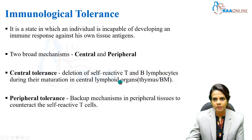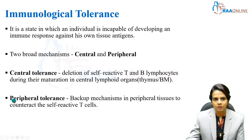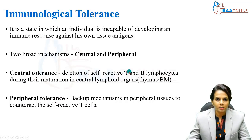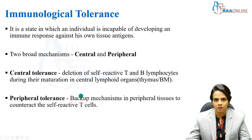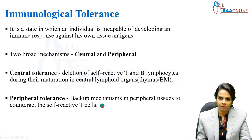Some self-reactive T cells and B cells escape central tolerance and leak into the peripheral tissues. There are various backup mechanisms in peripheral tissues to counteract these self-reactive T cells, and that is called peripheral tolerance.